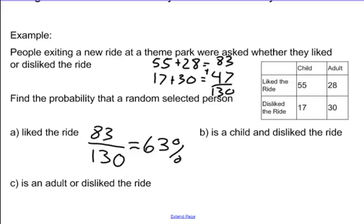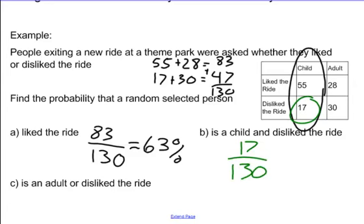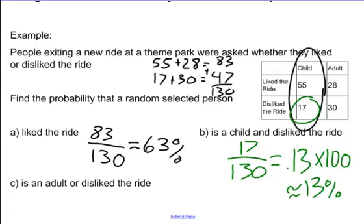Now we're going to go into a trickier topic. What is the probability that you selected a child and he or she disliked the ride? Now we're not only looking at one category — we're looking at children that disliked the ride. We have only 17 children that disliked the ride out of 130 people surveyed. If you do the fraction, 17 divided by 130, multiplied by 100, it's going to be around 13%.